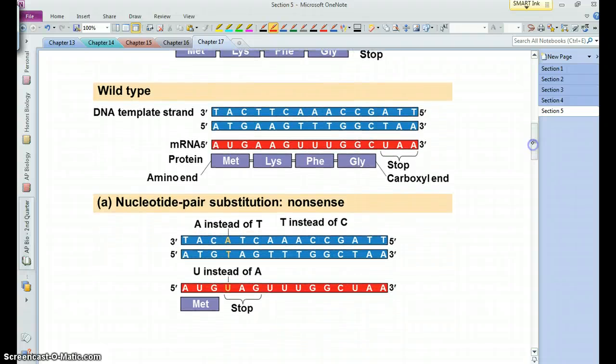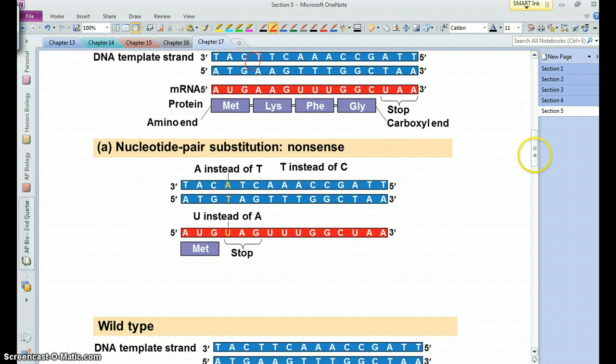Sometimes these things do make a big difference. Here we have a base pair substitution. Where you would normally have a T in the wild type sequence, we now have an A, which changes our mRNA transcript. It changes it from AAG to UAG, and so that's a change to a stop sequence. This is what's known as a nonsense mutation, when you have a stop sequence showing up sooner than it should. Essentially this protein is going to be missing amino acids, and that is likely to be very problematic, particularly the sooner it happens on the polypeptide.